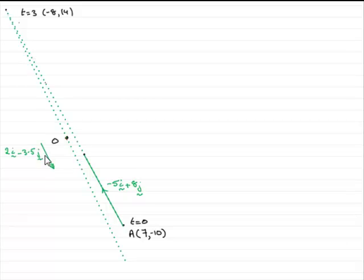And knowing that every second that passes, it moves by this amount in this direction, by this velocity vector which we found to be 2i minus 3.5j in the last part of the question.